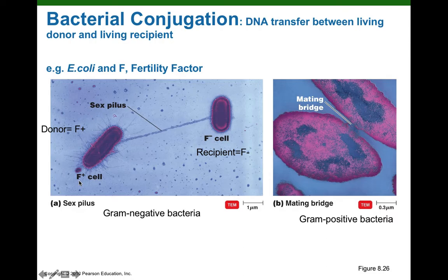By definition, if a bacterium carries the F factor, we call it F plus, and if you have the fertility factor, you're going to be the donor. The recipient is going to be a bacterium that lacks the F factor, so the recipient is F negative. The bacteria communicate with chemical messengers called pheromones, which permit a donor to recognize a recipient in the neighborhood, and that triggers formation of this long, beautiful sex pilus.